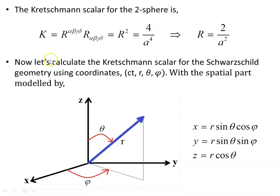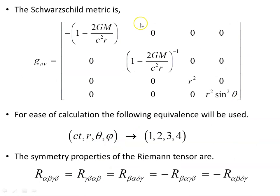Now let's calculate the Kretschmann Scalar for the Schwarzschild geometry using coordinates (t, r, θ, φ), with the spatial part modelled by φ, θ, r as azimuthal angle, polar angle, and radial coordinate. Embedding this in three-dimensional Euclidean space, the Schwarzschild metric takes the standard form. For ease of calculation, I'll use the equivalents 1, 2, 3, 4 for the coordinates t, r, θ, φ respectively — much easier to read.